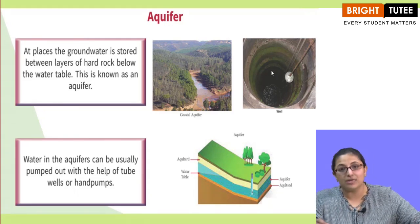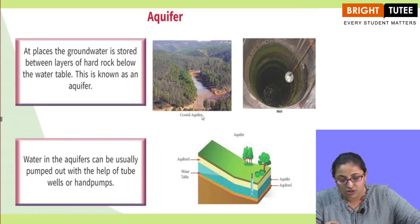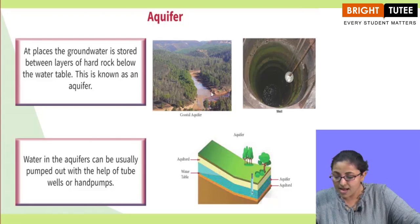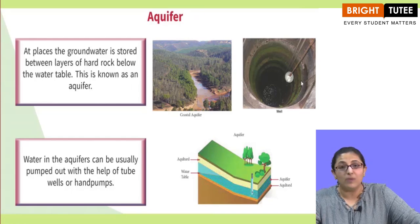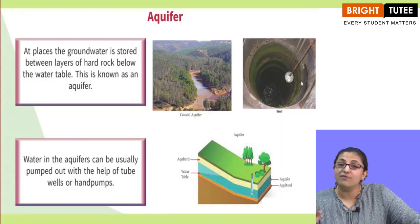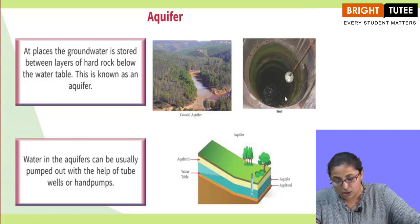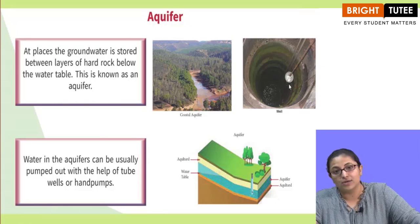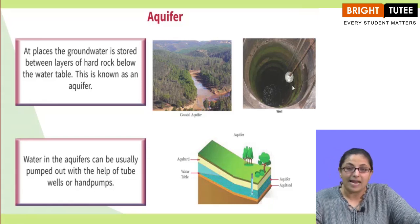Here we have two diagrams. This is a coastal aquifer — basically a picture from Australia. This is a well. Basically when water is stored between layers of rocks, the water found inside the well is the water stored between those rocks. So this is an aquifer.